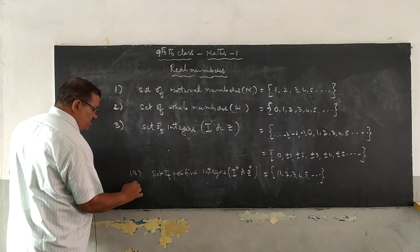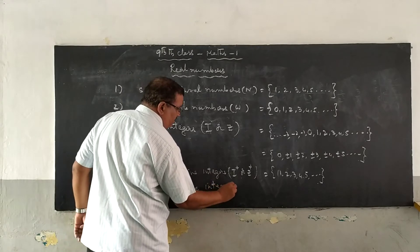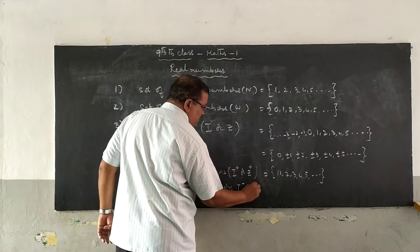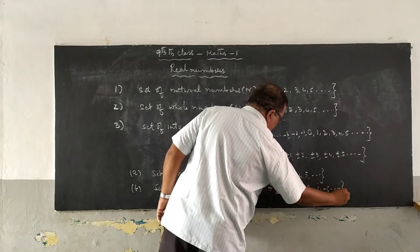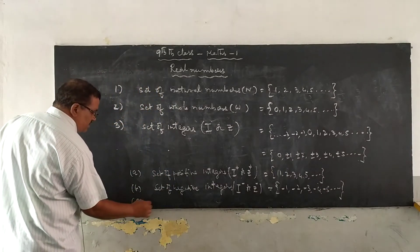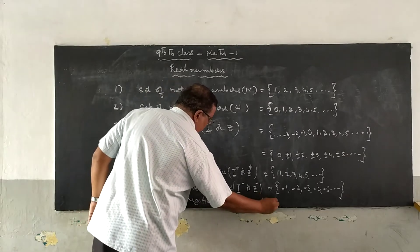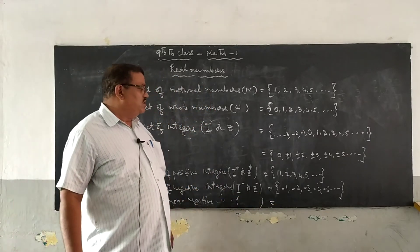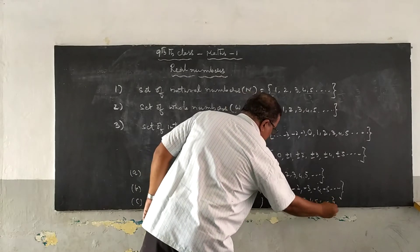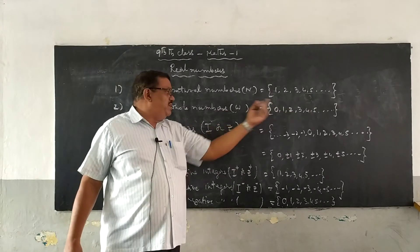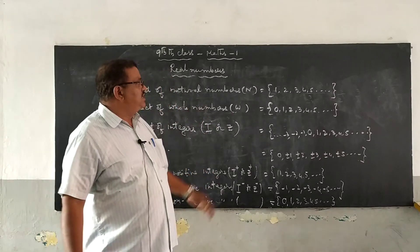The next one is the set of negative integers, represented with I⁻ or Z⁻. These are minus 1, minus 2, minus 3, minus 4, minus 5, and so on. The third one is the set of non-negative integers. There is no special letter indicated for the set of non-negative integers. These are 0, 1, 2, 3, 4, 5, and so on. The set of non-negative integers is represented by the set of whole numbers. So, the set of whole numbers is nothing but the set of non-negative integers. This is the classification of numbers.